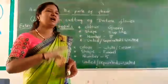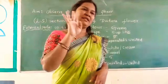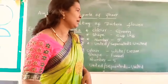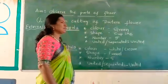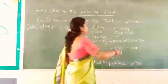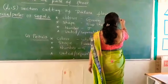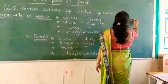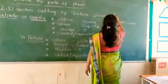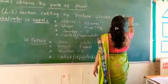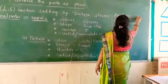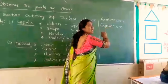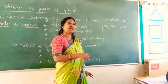So now we have found four main parts of the flower. The external parts are sepals and petals, and now we find the gynoecium and androecium — the female and male reproductive parts of the flower.